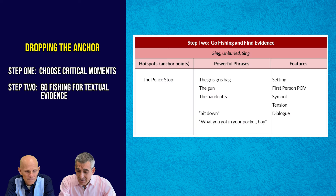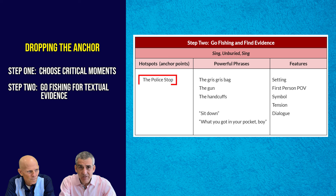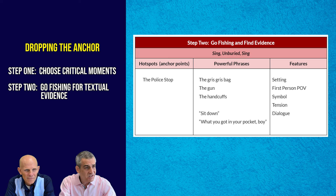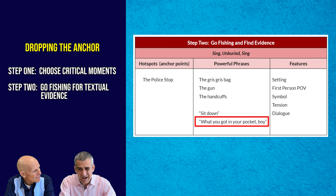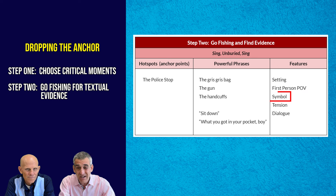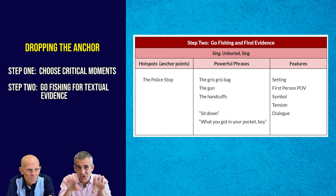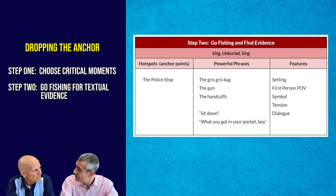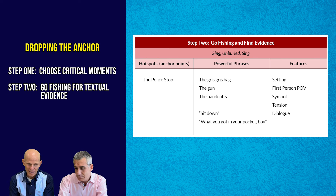Similarly, in Sing, Unburied, Sing, we drop the anchor into the police stop. The phrases I want to pull in for Criterion A include the grigri bag, the gun, the handcuffs, and the dialogue where dehumanization takes place — where the officer tells Jojo to sit down and calls him 'boy,' asking what he has in his pocket. With respect to authorial choices, we're thinking about setting, first-person point of view because Jojo narrates this chapter, the gun as a symbol, tension, and dialogue. We're taking these phrases and pinning them to authorial choices — building content and form simultaneously.